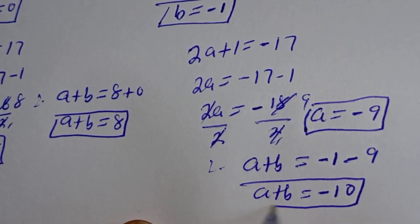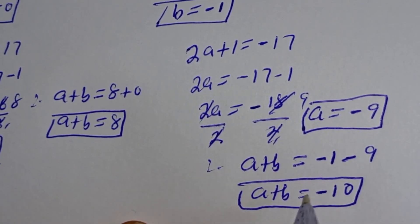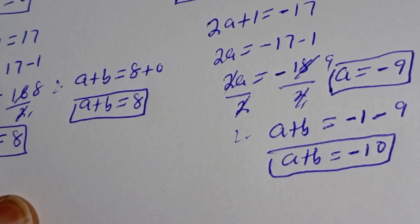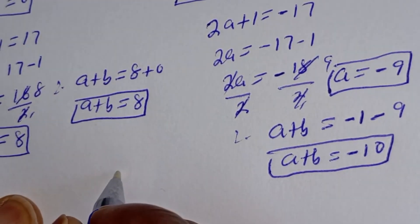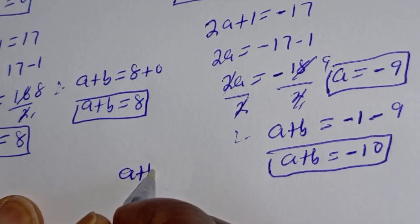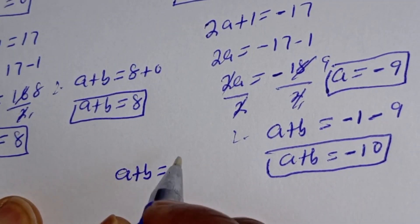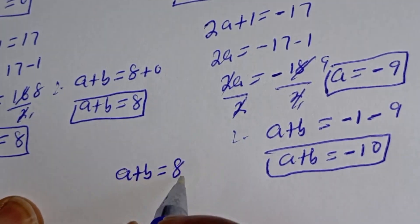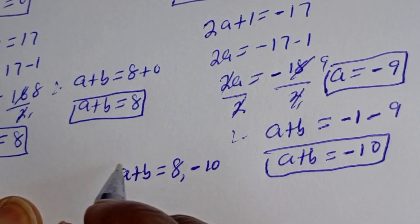This is also the value of a plus b. Therefore our final answers are: a plus b is equal to 8 and a plus b is equal to minus 10.